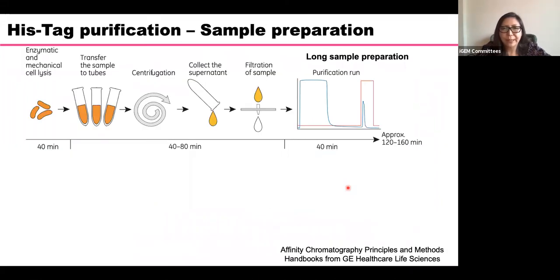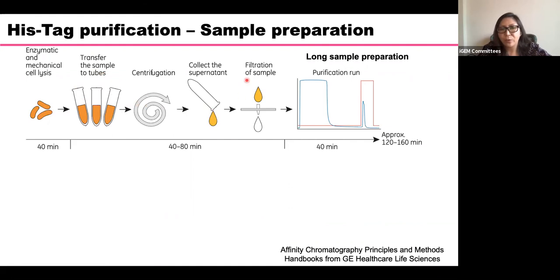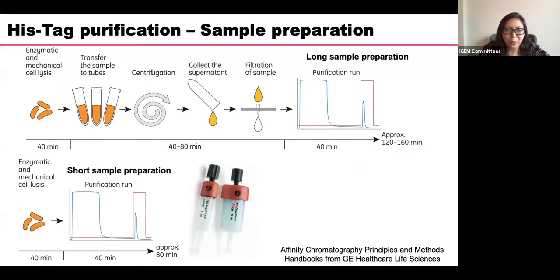The challenge with this method is the long sample preparation: you break the cells, centrifuge, collect the supernatant, filter it, and then purify. This traditional workflow takes 120 to 160 minutes. However, companies have developed new columns where you just break the cells and run the purification directly, reducing the time to about 18 minutes — saving significant time in the lab.